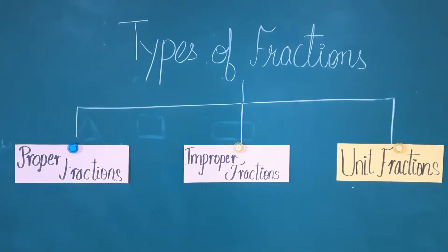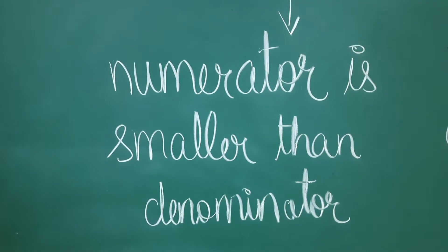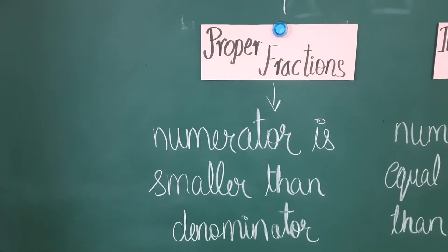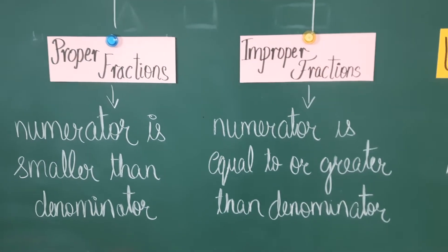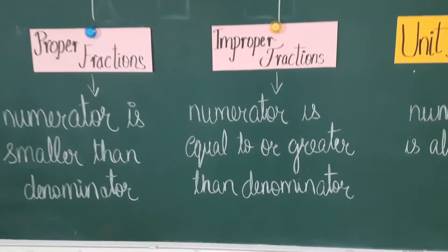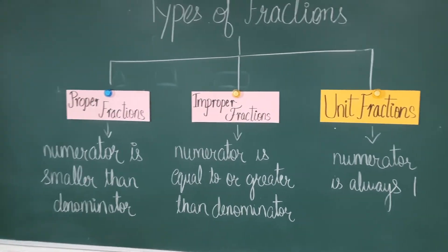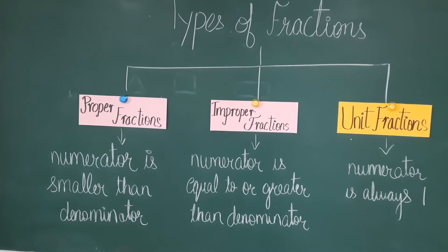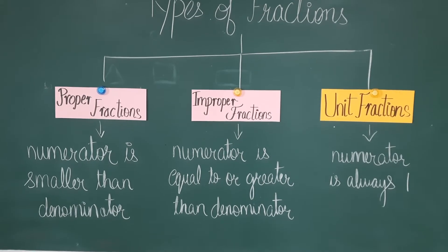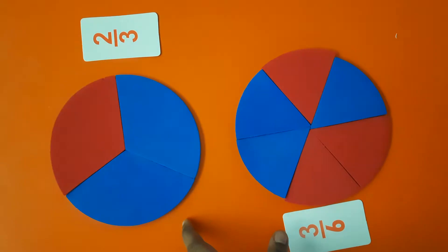Let me go one by one. Proper fractions: the numerator is smaller than the denominator. Improper fractions: as the name suggests, it is the opposite of proper, so the numerator is equal to or greater than the denominator. Unit fractions: the numerator is always one.